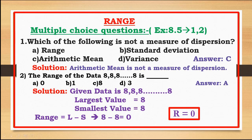We are familiar with the range. The range of the data is calculated using the formula: Range = L minus S. The data values are 8, 8, 8, 8, 8 — all the same. So 8 minus 8 is 0. R is 0. 0 is option A, so the answer is A. It's easy to figure out.